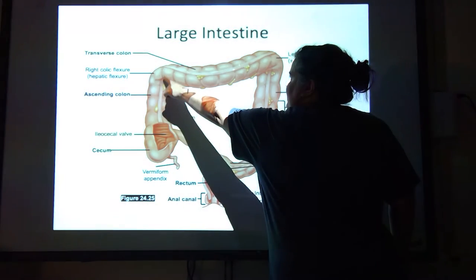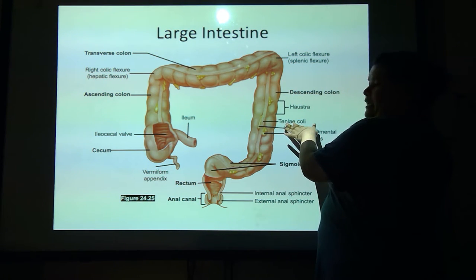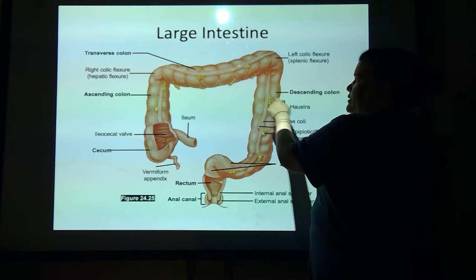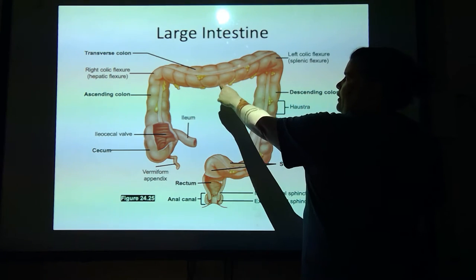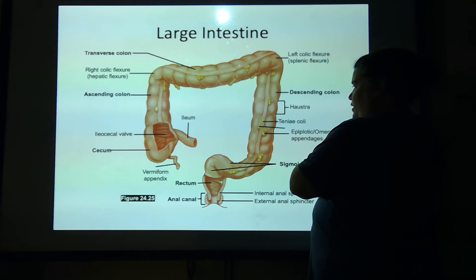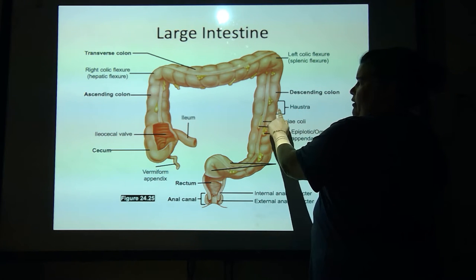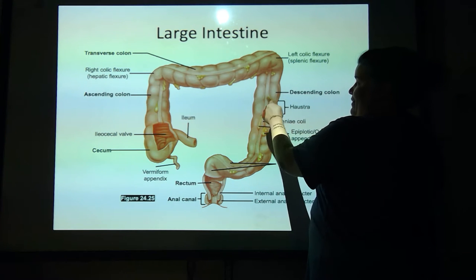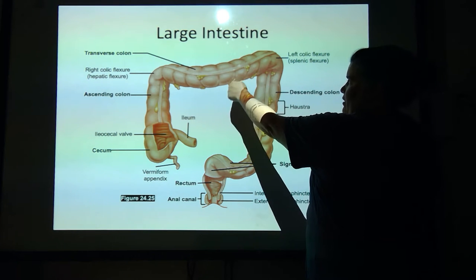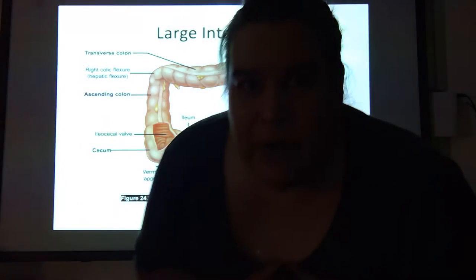We also have this strip-looking thing right here — this is actually called the teniae coli. And every bump and lump that you see here is called a haustrum. If you want multiple, you can say haustra, but every one of these is called a haustrum. And then these little lumpy things here are called epiploic appendages or omental appendages. We have no idea what they do — we know they exist but we're not sure what they're there for.